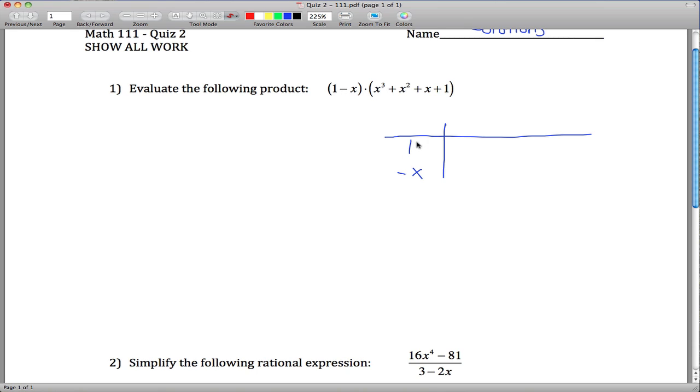The way that somebody showed in class was to use the box method. You take this 1 minus x and write the 1 here and the minus x here, and then we got an x cubed, an x squared, an x and a 1 from this guy, put it up here.